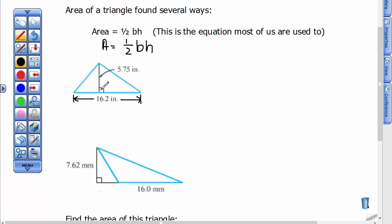This 5.75 is pointing to the height of the triangle from this vertex that is opposite this base. So that's what we mean by h, it's got to be the height from the vertex that is opposite the side that would be called the base. So in this particular problem, to find the area, I would take half of the base, which is 16.2 inches, and I'd multiply it by the height, which is 5.75 inches.